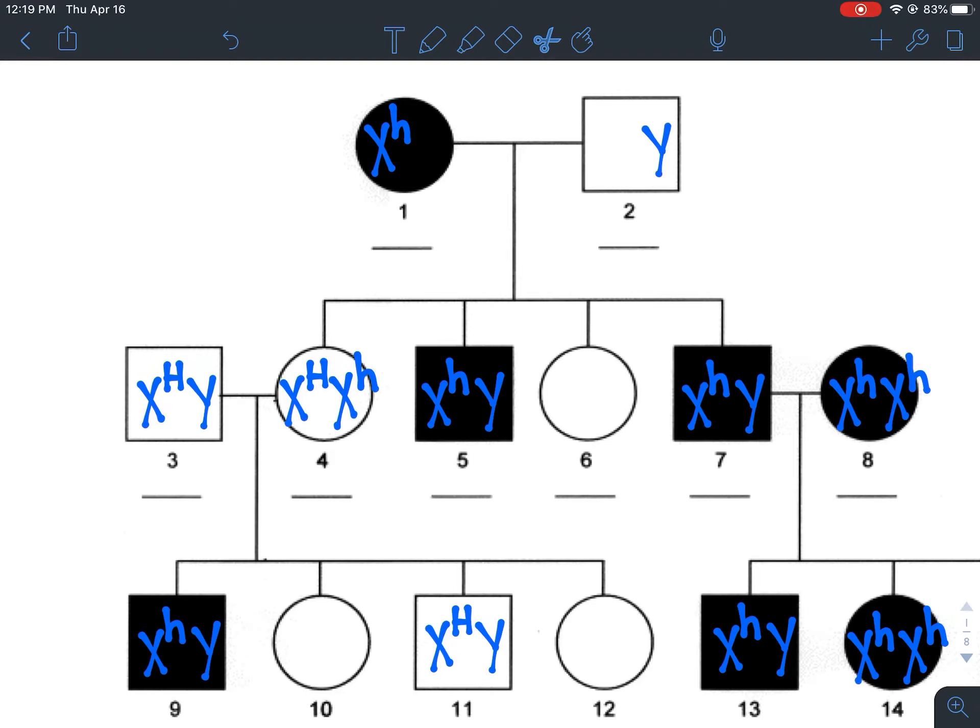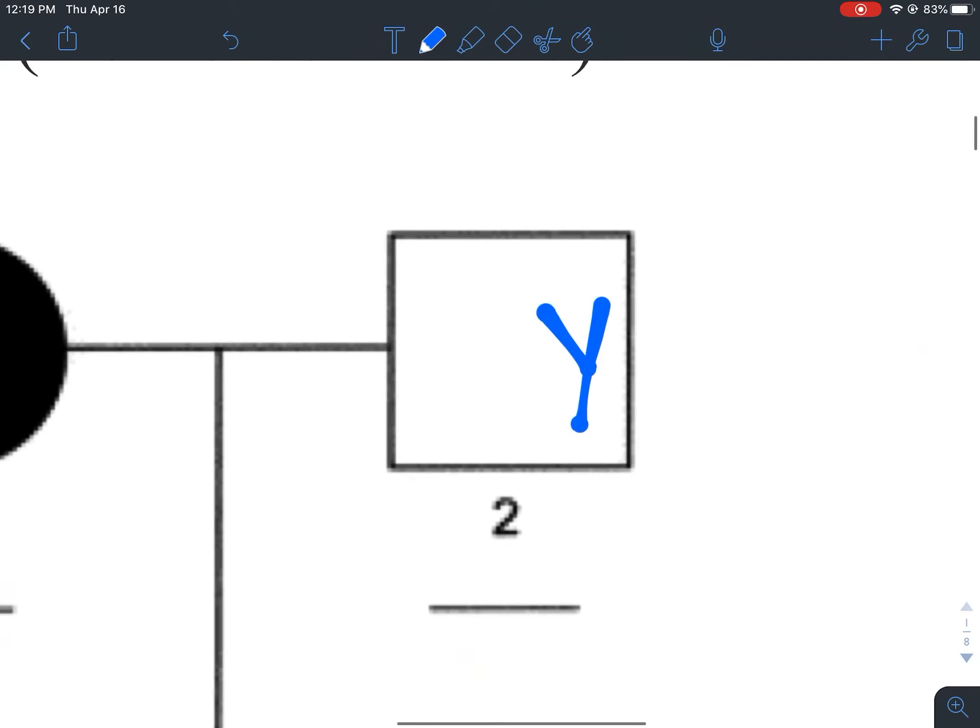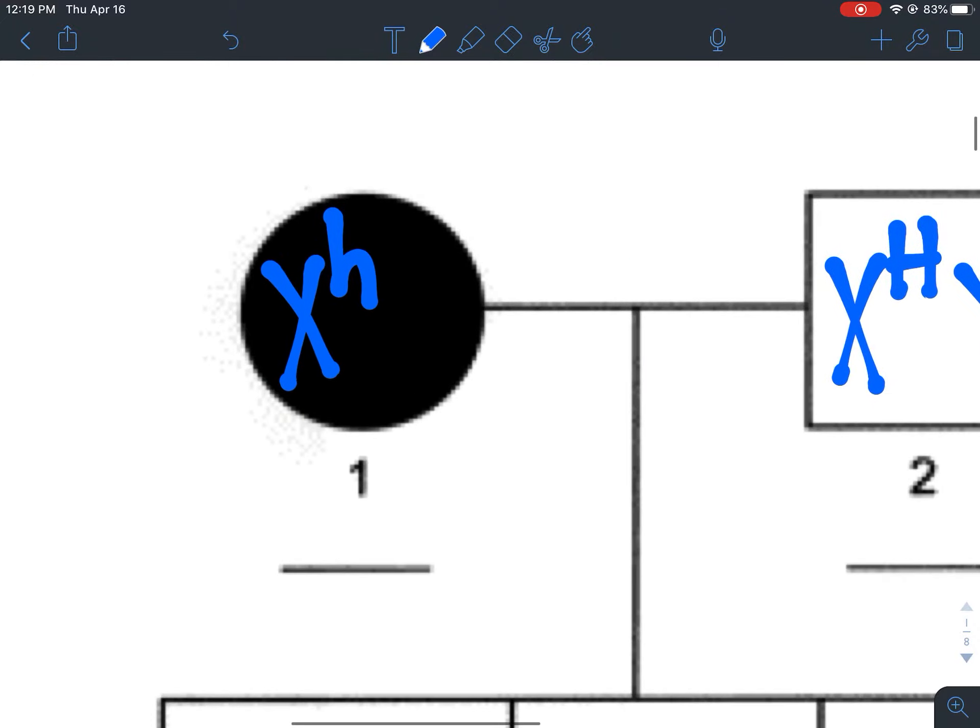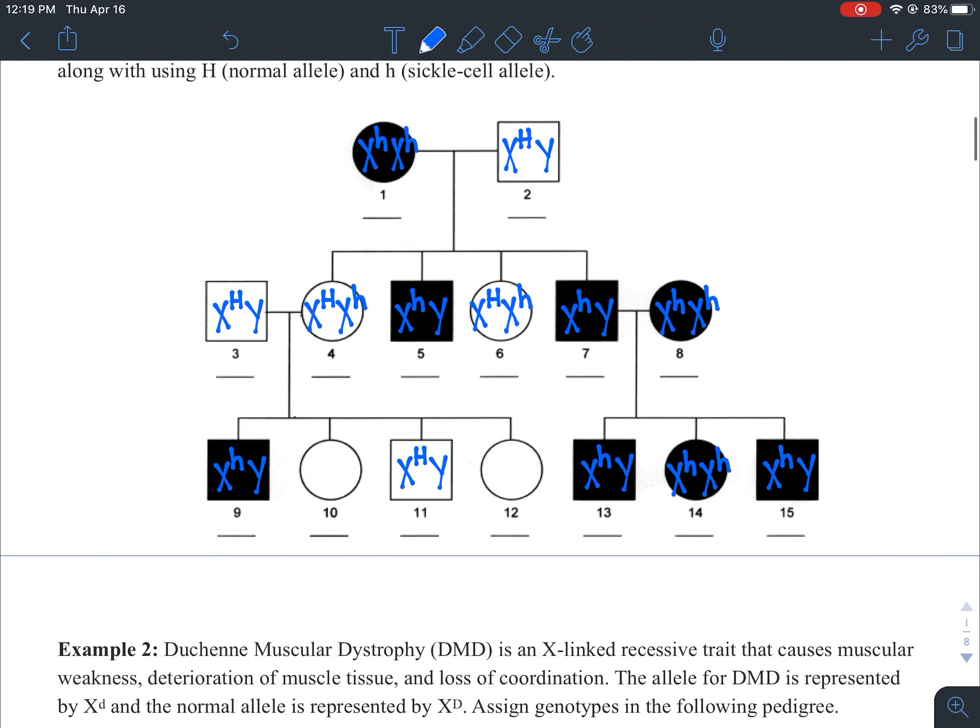The same exact thing would have happened with her sister. So I'm just going to copy this and paste it in right here. And then I'll go back here and just really quickly fix out dad, who was normal, and mom, who was carrying two copies of the recessive allele. So that gets us down to just two additional individuals.